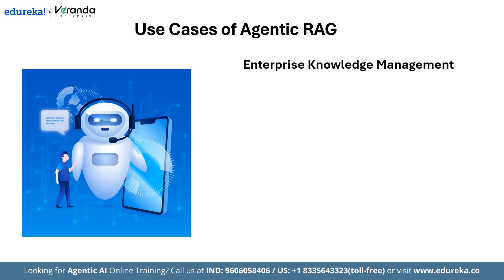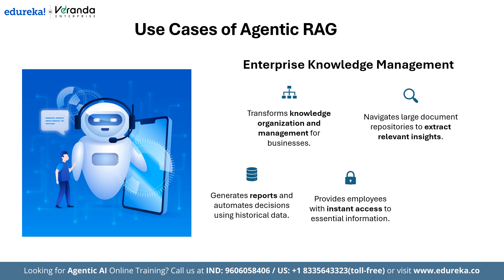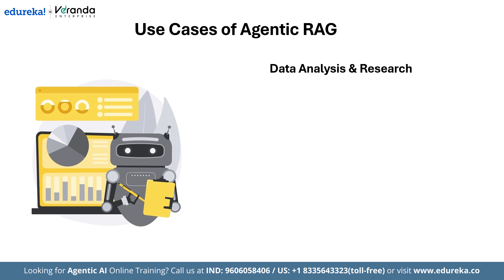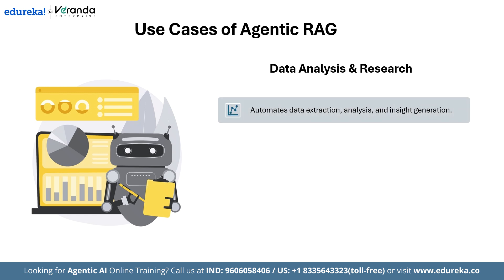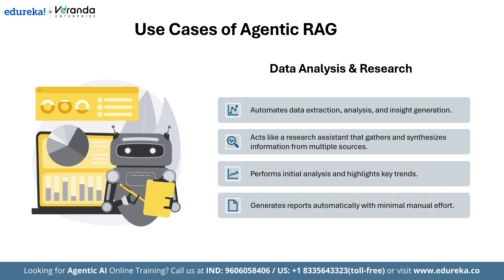In Enterprise Knowledge Management, Agentic RAG has the potential to transform how businesses organize and manage knowledge. It can navigate extensive document repositories, extract pertinent insights for staff, produce reports, and even automate decisions using historical data — ensuring employees have immediate access to the information they need, saving time and boosting productivity. In Data Analysis and Research, Agentic RAG automates the extraction, analysis, and generation of data insights. Imagine a research assistant that not only gathers and synthesizes information from multiple sources, but also conducts initial analysis, generates reports, and identifies trends without requiring manual input.